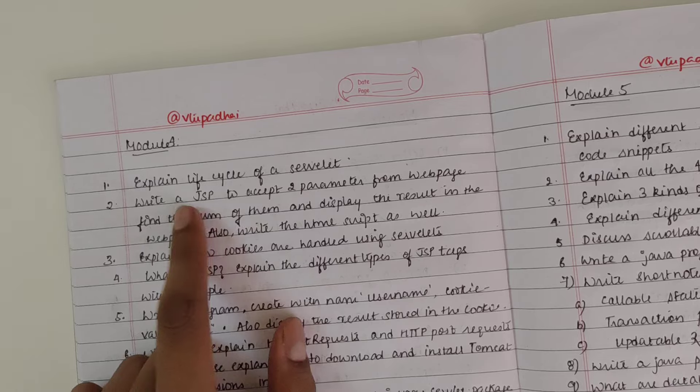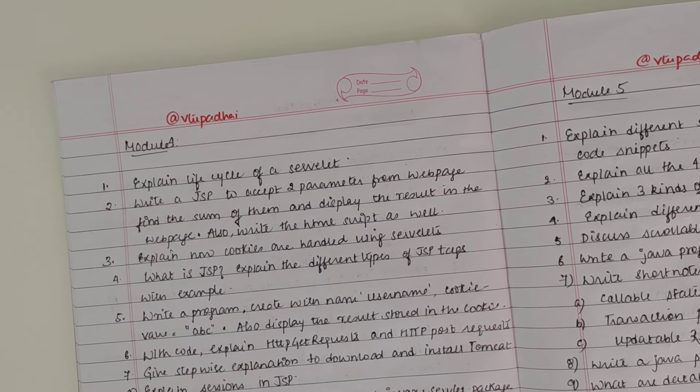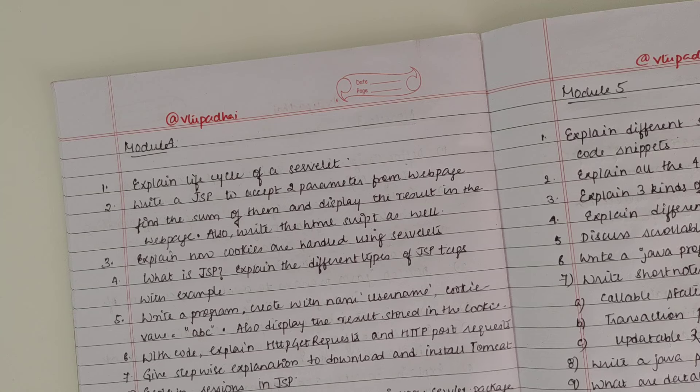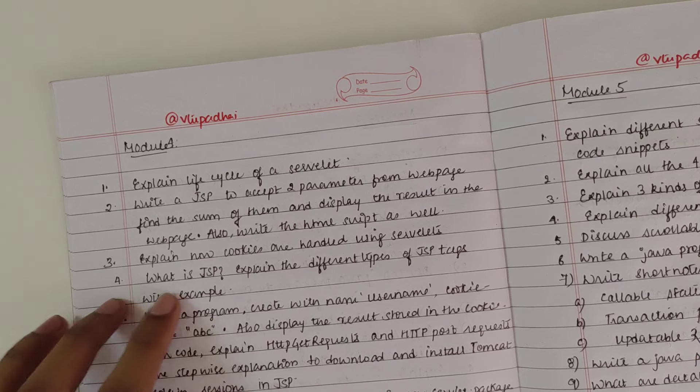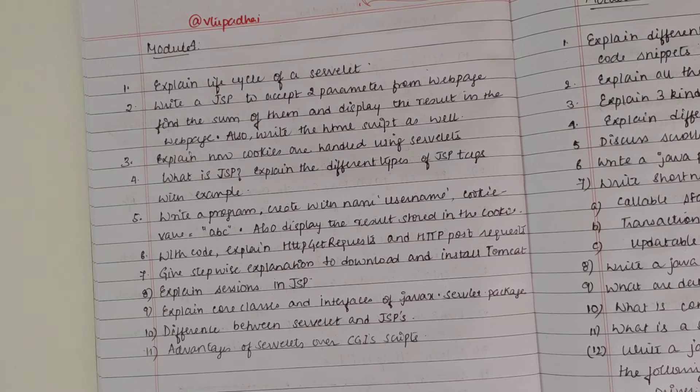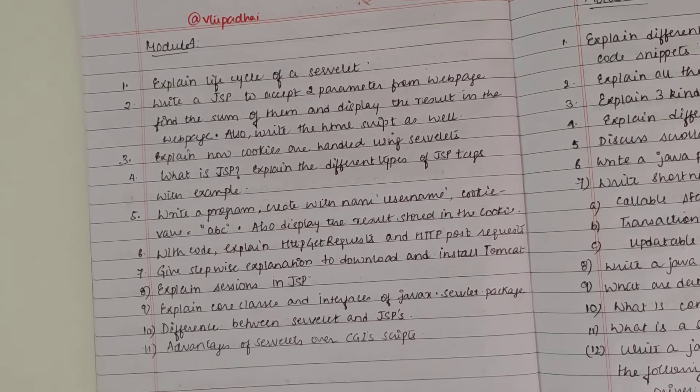Explain how cookies are handled using servlet. What is JSP? Explain different types of JSP tags. Write a program to create a cookie with name username, cookie value is ABC, and also display the result which is stored in the cookie.